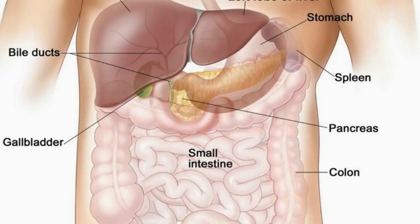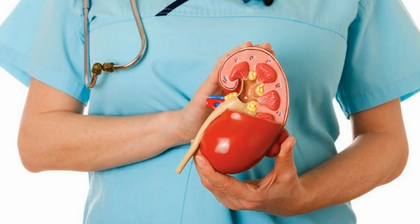Each kidney contains millions of its functional units called nephrons. Kidneys are surrounded by a fibrous tissue called renal capsule. The cortex, medulla, pelvis, and hilum are the main parts of the kidney.